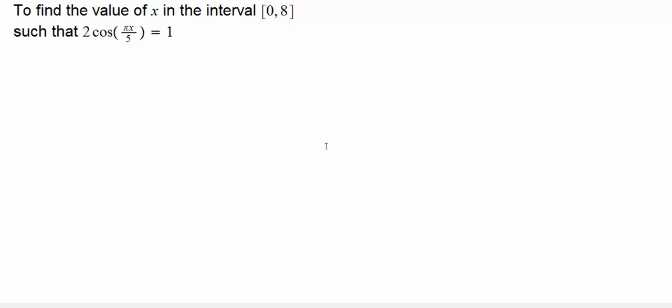We would like to find the value of x in this interval such that 2 cosine of pi x over 5 equals 1. And the values are - let me just say values, because there may be more than one value in here.